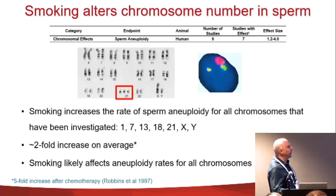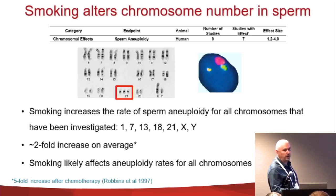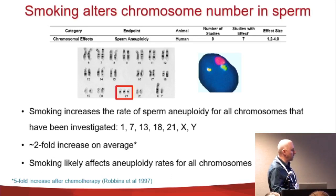The other endpoint for which there is good data is the impact of tobacco smoking on aneuploidy in male germ cells. These are all human studies analyzing the presence of numerical abnormalities in sperm. In seven of nine cases, a significant effect was found, with a 1.2 to 4-fold increase. For context, chemotherapy in human sperm causes a five-fold increase in numerical abnormalities — so in some of these studies, the effect of smoking was almost equivalent to receiving high doses of strong genotoxic agents.